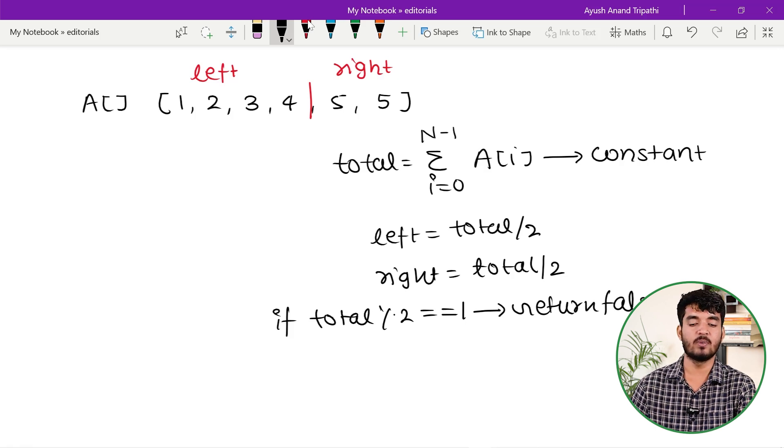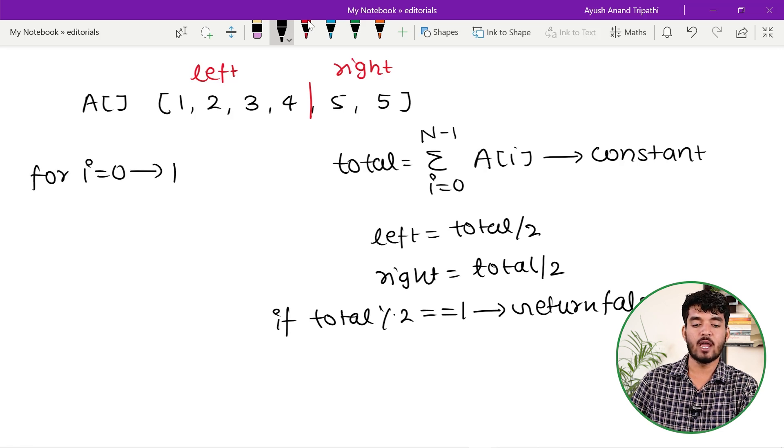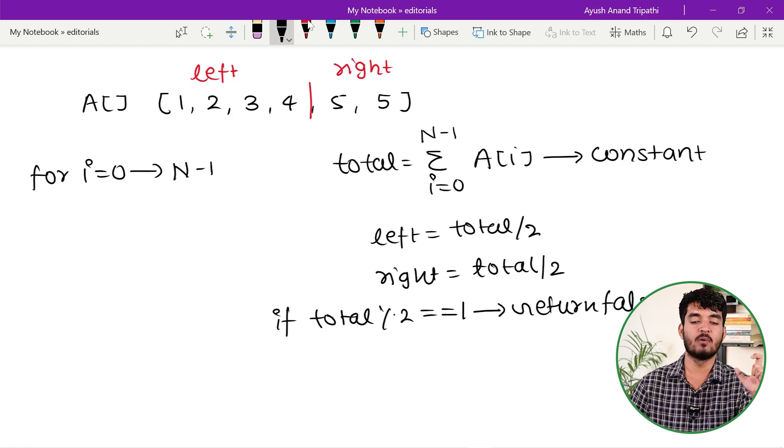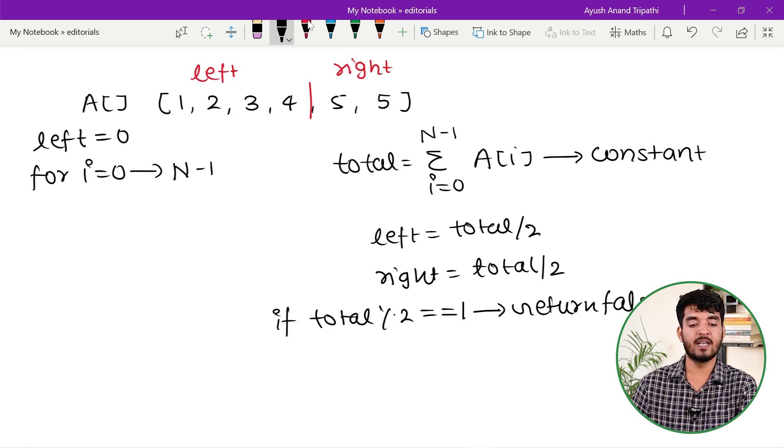Otherwise, I will simply iterate over all the indices from 0 to n-1, and in progressive order I will find the sum of all elements from 0 to i—that is my left half. Initialize left = 0, then simply add the element at index i to the variable left: left += A[i].